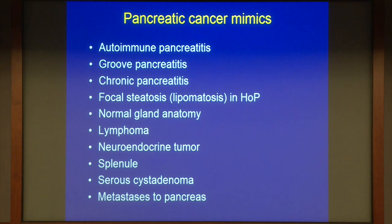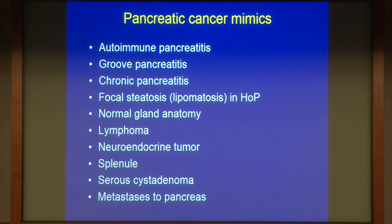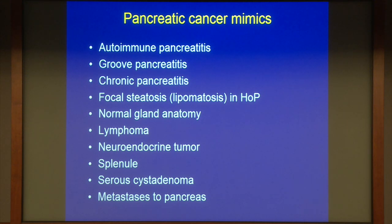So there's a list of differentials to consider. Not every single mass is adenocarcinoma, though that's the main concern to rule out. Autoimmune pancreatitis — we didn't know much about it a couple of decades back, but we're learning more now. Groove pancreatitis, chronic pancreatitis — sometimes very hard to diagnose on EUS because of calcifications. Chronic pancreatitis can cause pancreatic duct dilation, making it really challenging. Other differentials include focal fat in the head of pancreas, ventral-dorsal differentiation mimicking a head mass, annular pancreas, lymphoma, neuroendocrine tumors, splenules, serous cysts that can look solid, and metastases.